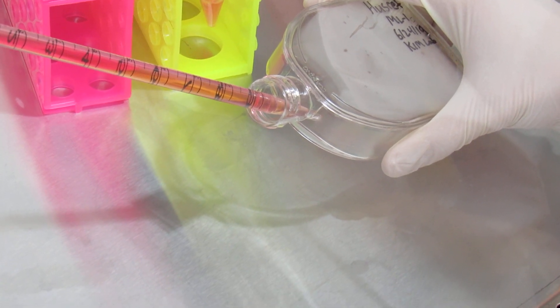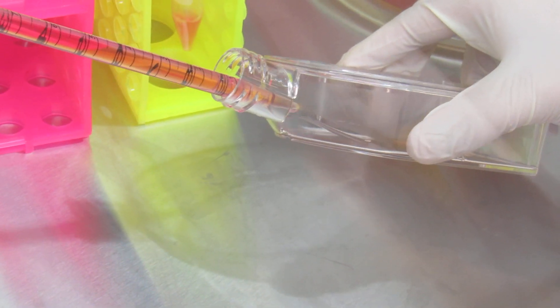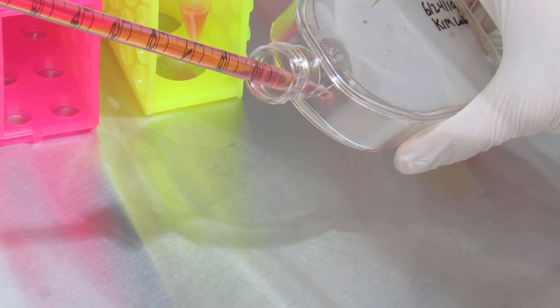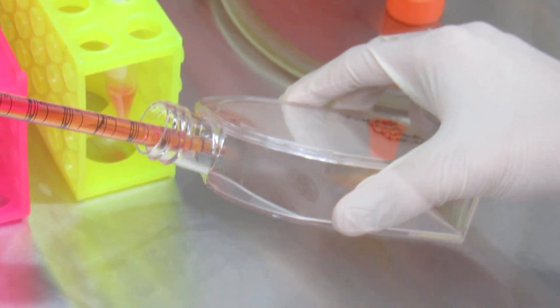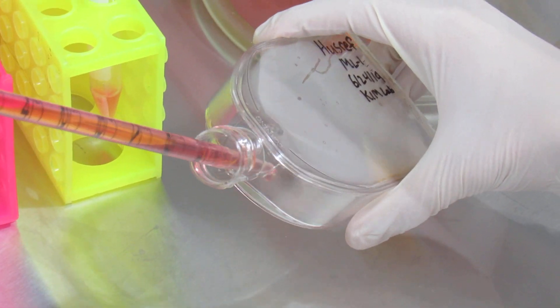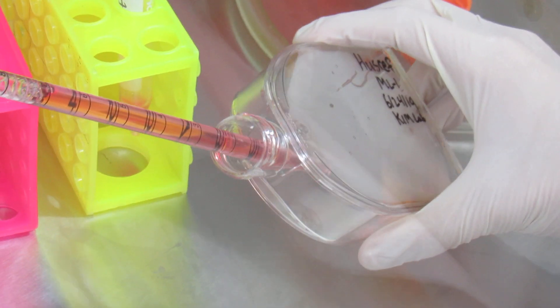After you've successfully added it dropwise, you will pipette up and down to split the cells from each other. So once you trypsinize them, they are no longer attached to the surface of the flask, however they are still clumped together. That pipetting step is what's going to separate them from each other so that you can get an accurate cell count.